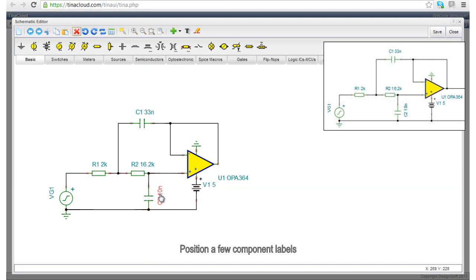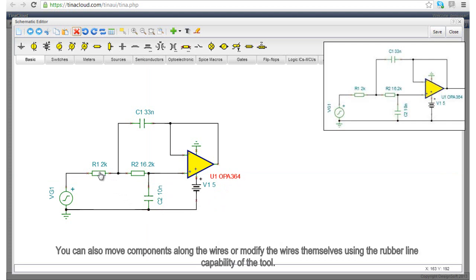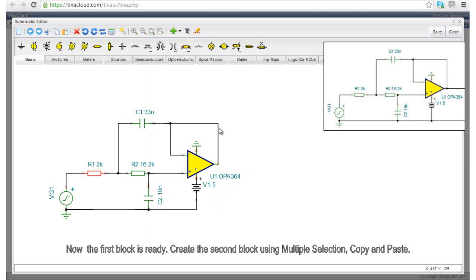Position a few component labels. You can also move components along the wires or modify the wires themselves using the rubber line capability of the tool. Now, the first block is ready.